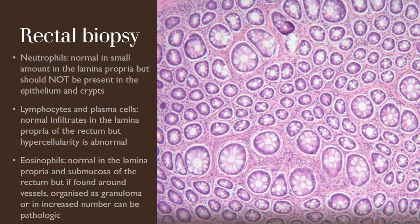The rectum is the other portion of the gastrointestinal tract accessible in a non-invasive way. With rectal biopsies we may reach a diagnosis of IBD, but there are some considerations, because a small amount of inflammatory cells can be normal. For example, neutrophils are normal in a small amount in the lamina propria but should not be present in the epithelium and crypts. When neutrophils are found in these locations, they are always pathologic.